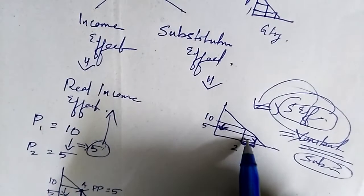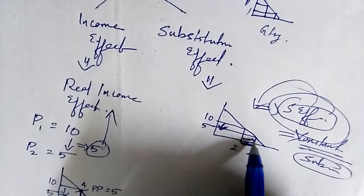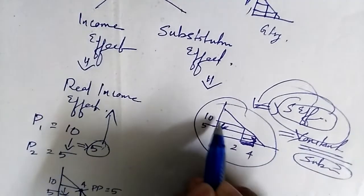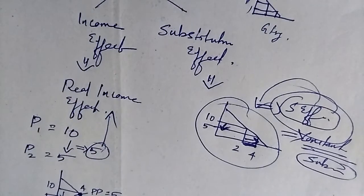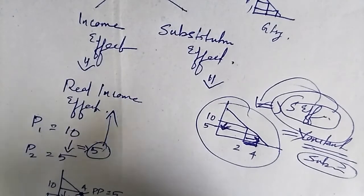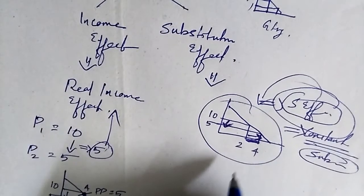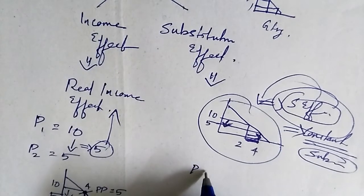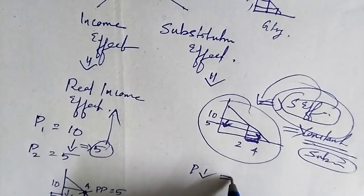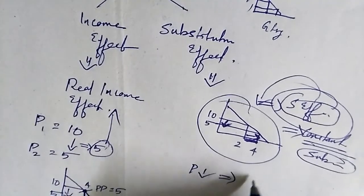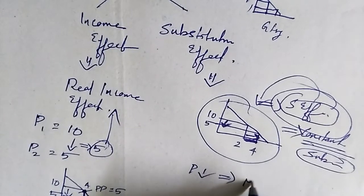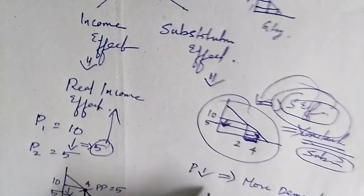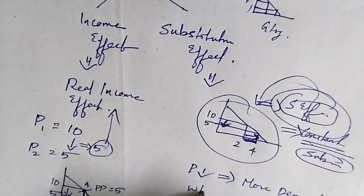You are substituting the market product with the product for which the price has been decreased. When the price of a particular product is decreased, you will demand more.